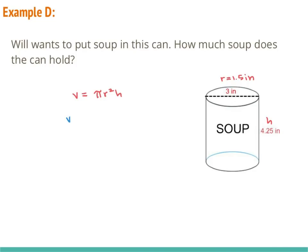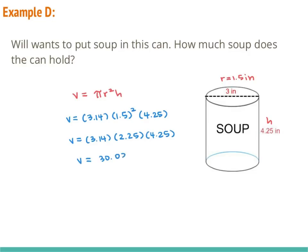And we substitute into the formula. So pi is 3.14 times the radius, which is 1.5 squared, times the height of 4.25 inches. We need to follow order of operations, so we need to square the 1.5 first, so we'll get 2.25. And now we multiply, and we get volume is equal to 30.03 inches cubed.